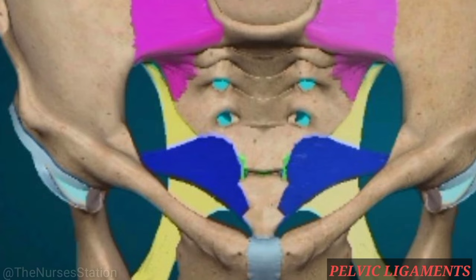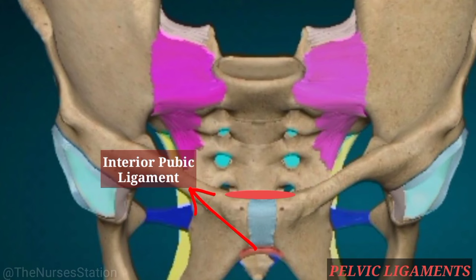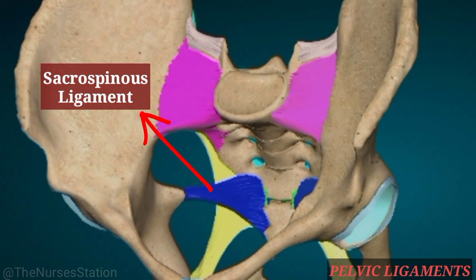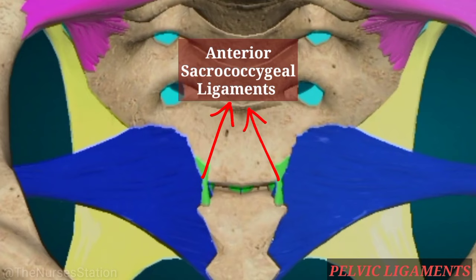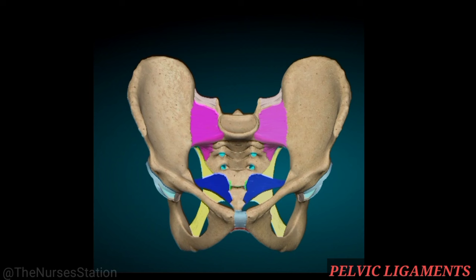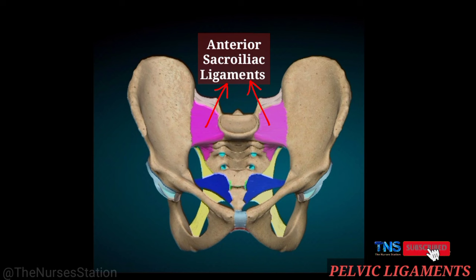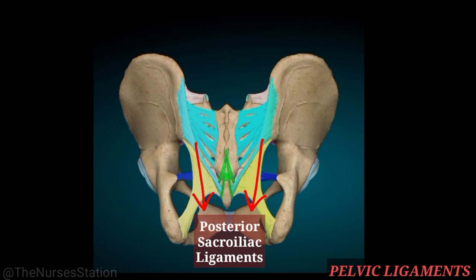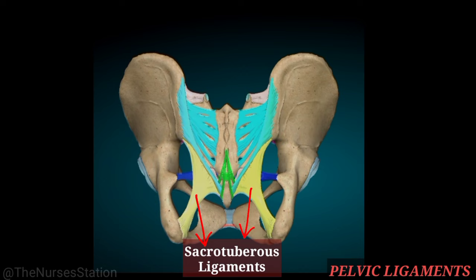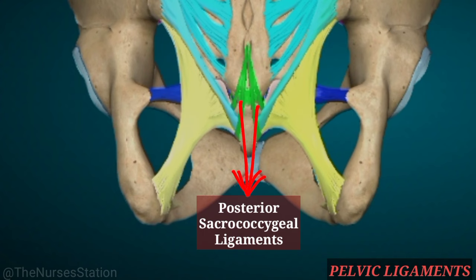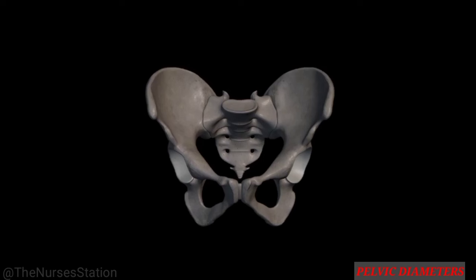The pelvic ligaments: there is a superior pubic ligament situated on the superior aspect of the symphysis, attaching laterally to the pubic tubercles. The inferior, or arcuate, pubic ligament is a thick fibrous band connecting the inferior parts of the joint. The sacrospinous ligaments run from the sacrum to the ischial spine. Anterior sacrococcygeal ligaments connect the coccyx with the sacrum anteriorly. The anterior sacroiliac ligament covers the front of the sacroiliac joint. The posterior sacroiliac ligament runs along the back, providing considerable stability. The sacrotuberous ligament extends from the posterior ileum, lateral sacrum, and coccyx to the ischial tuberosity. Posterior sacrococcygeal ligaments connect the sacrum and coccyx posteriorly.